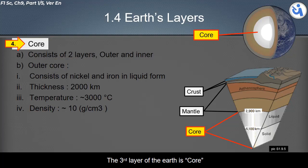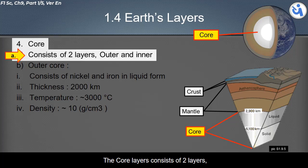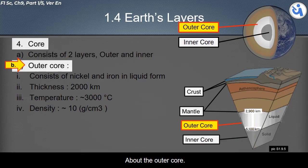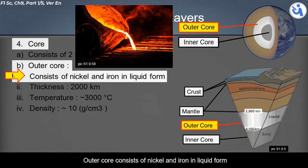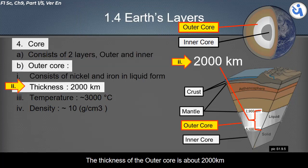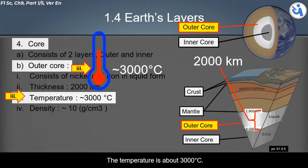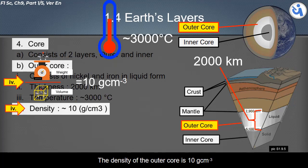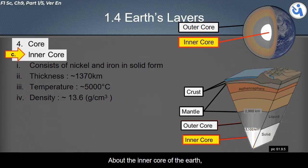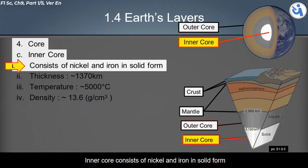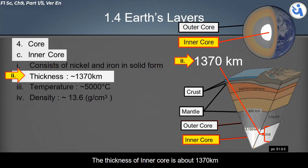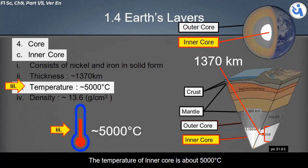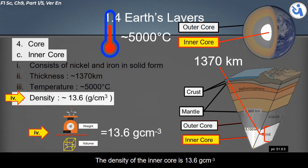The third layer of the Earth is the core, which consists of two layers: the outer core and the inner core. The outer core consists of nickel and iron in liquid form, is about 2,000 kilometers thick, has a temperature of about 3,000°C, and a density of 10 g/cm³. The inner core consists of nickel and iron in solid form, is about 1,370 kilometers thick, has a temperature of about 5,000°C, and a density of 13.6 g/cm³.